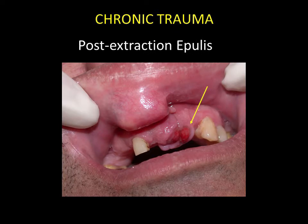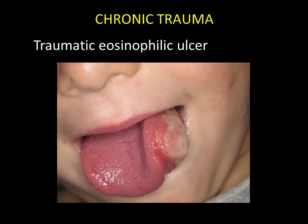Post-extraction epulis is an inflammatory granuloma secondary to a tooth extraction. The patient was seen again a few weeks after the extraction and there was persisting inflammatory tissue in the alveolus. Simple curettage will allow healing to take place. There is a specific form of swelling caused by trauma known as a traumatic eosinophilic ulcer. These are large swellings observed principally on the tongue, rich in eosinophils, and which can be mistaken clinically for a malignant tumor.